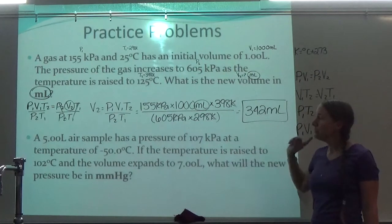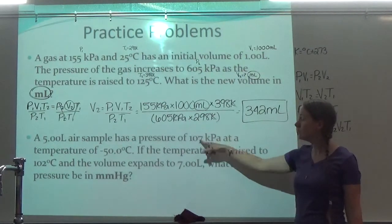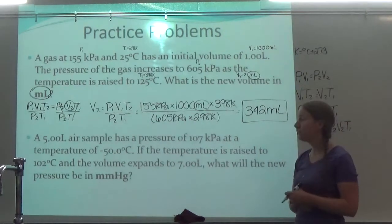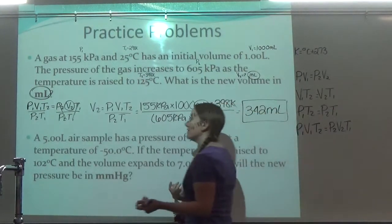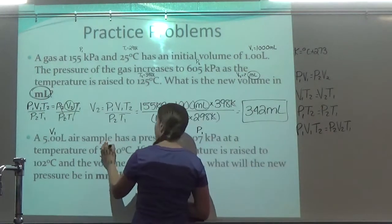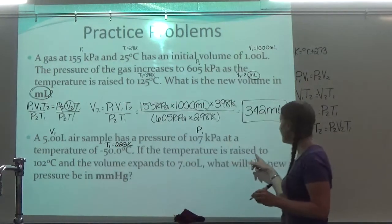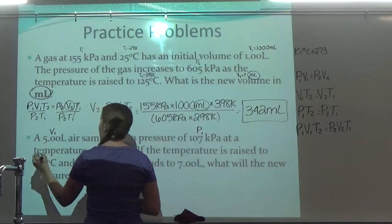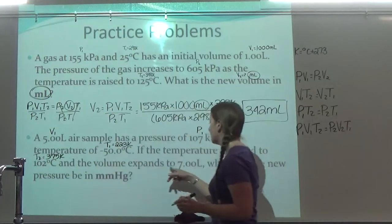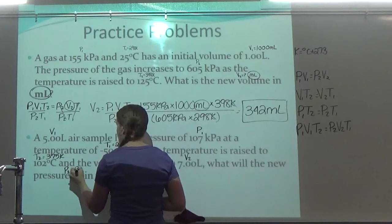Try the next one, but be aware that I gave you pressure in kilopascals but want your answer in millimeters of mercury — so you can either convert before plugging in or get the answer in kPa and convert after. A 5-liter air sample — there's my V1 — has a pressure of 107 kPa — there's my P1 — at a temperature of negative 50 degrees Celsius — there's my T1 — so I add 273, which gives 223 Kelvin. The temperature is raised to 102 degrees Celsius — there's my T2 — so I add 273, making it 375 Kelvin. The volume expands to 7 liters — there's my V2. What will the new pressure be, in millimeters of mercury?